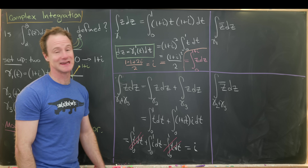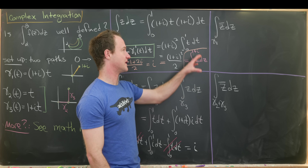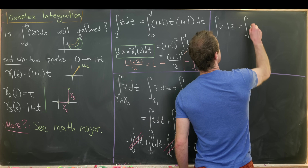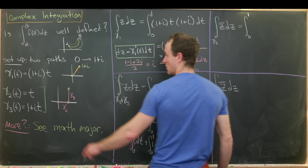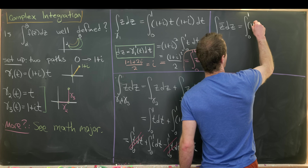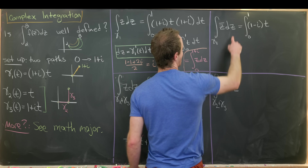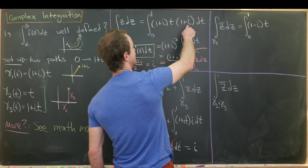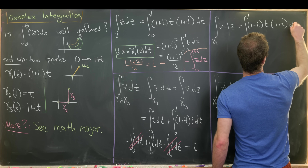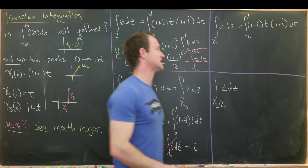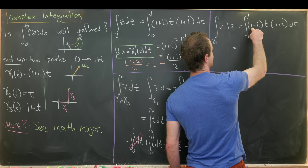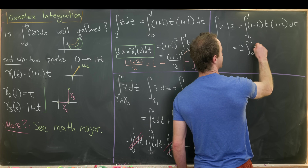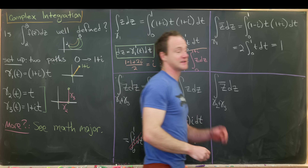Now let's move on to the second example, where we integrate the conjugate z-bar over the same paths. For gamma one: z-bar is the conjugate of (1+i)t, which is (1-i)t, and dz is still (1+i) dt. Then (1-i)(1+i) = 1 - i² = 1+1 = 2, so we get 2 times the integral from zero to one of t dt, which gives us the number one.